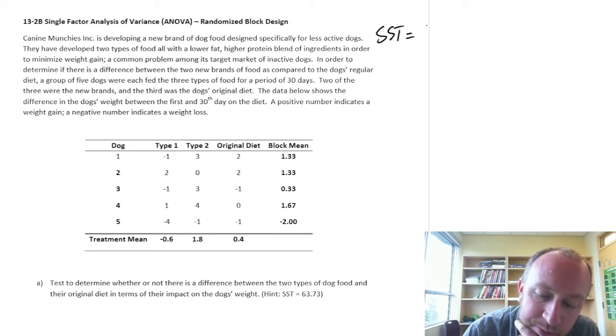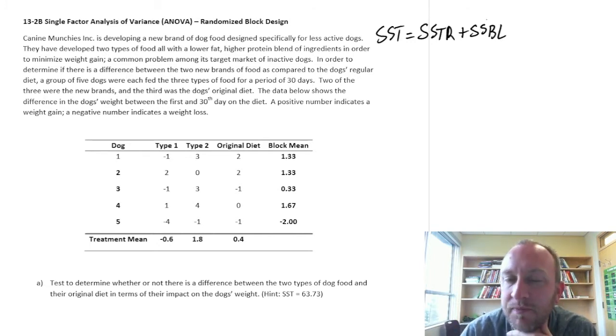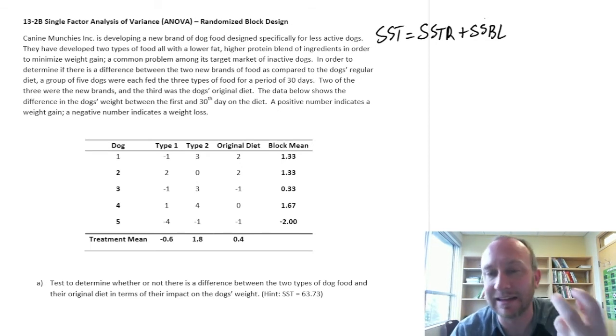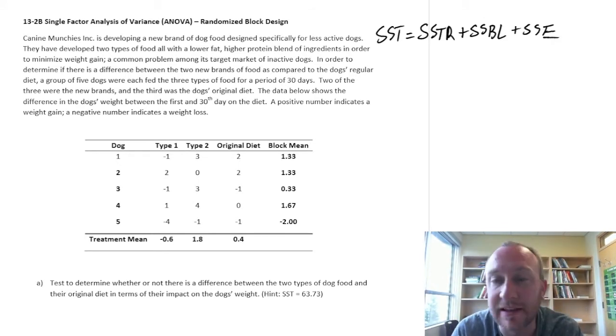So with a randomized block, we are looking at that source of variation that can be attributed to our treatments, that which can be attributed to heterogeneity or differences between our observational units, those things that we are observing, those things that we are getting the data from. Plus, of course, random fluctuation, random variation in a data set.